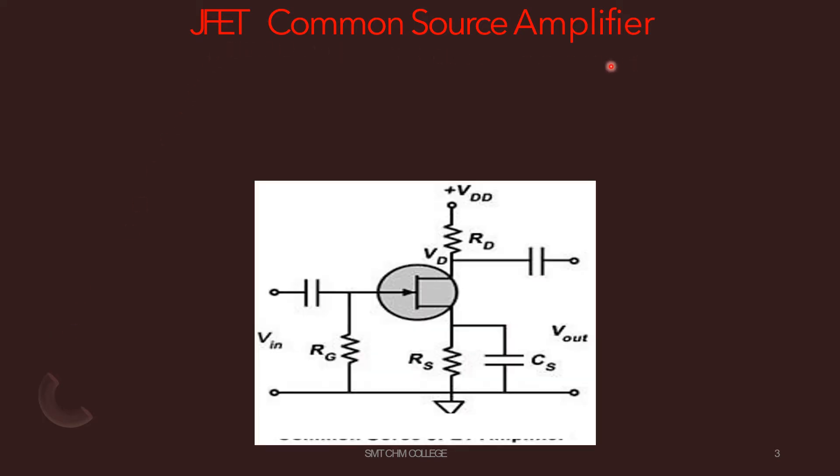JFET common source amplifier. This is the circuit diagram of a common source amplifier. Input voltage is coupled directly to the gate by the coupling capacitor. This is the input voltage VIN which is coupled to the gate by this coupling capacitor. Source is bypassed to ground by the bypass capacitor. This is the bypass capacitor.